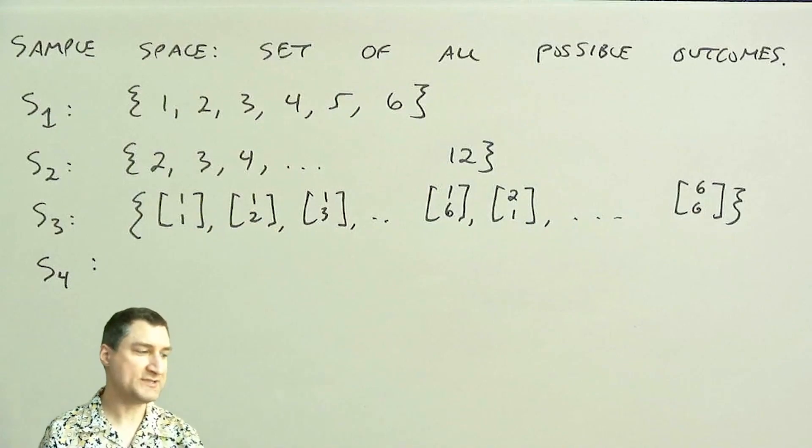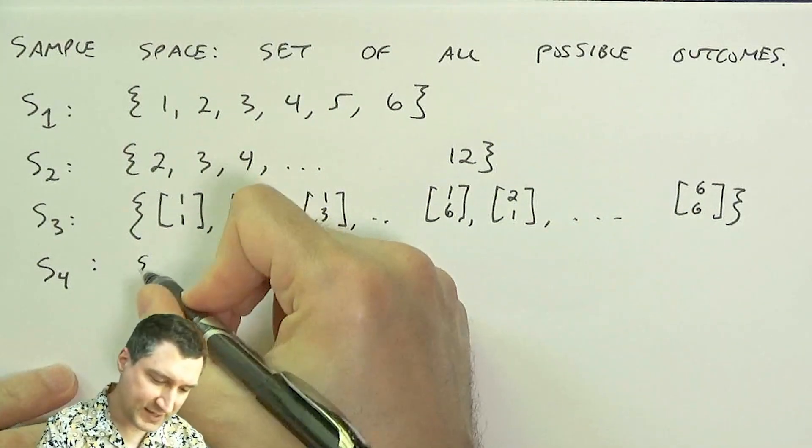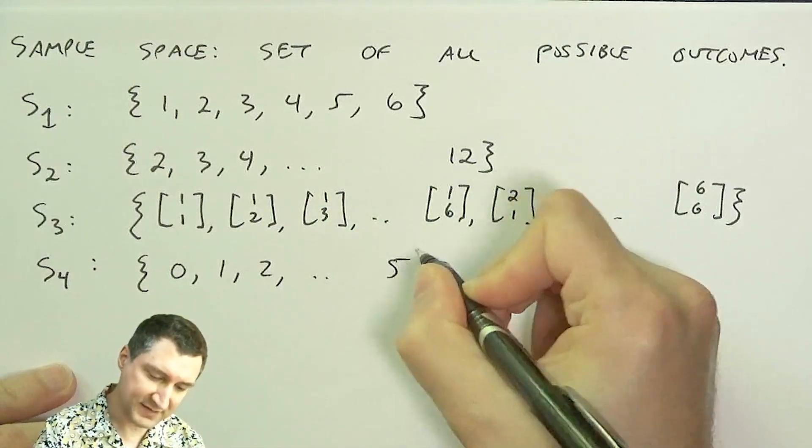So in the coin flipping experiments, I was saying, okay, toss the coin five times and record the number of heads. And so in that case, I could have no heads, one head, two heads, all the way up to five heads.